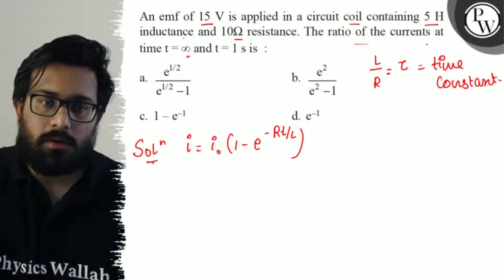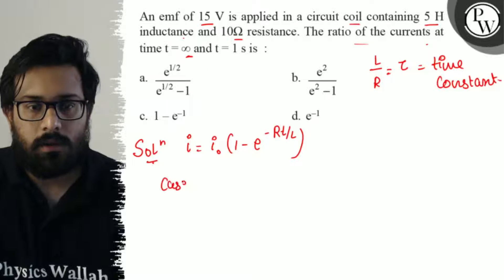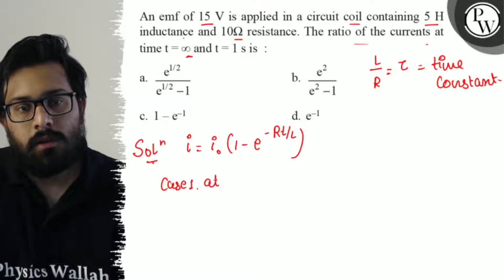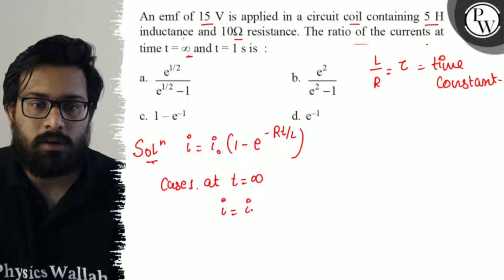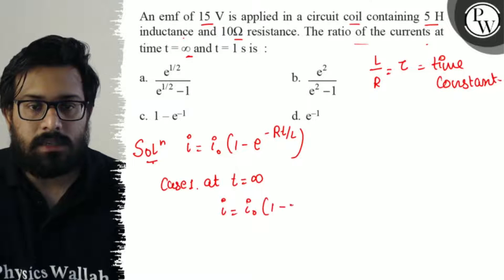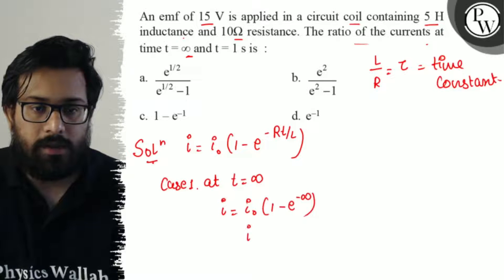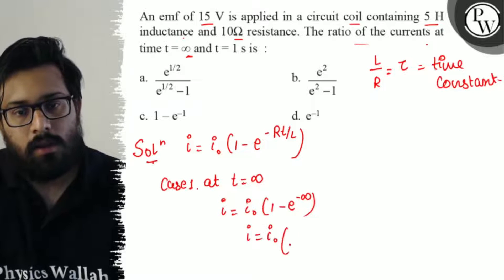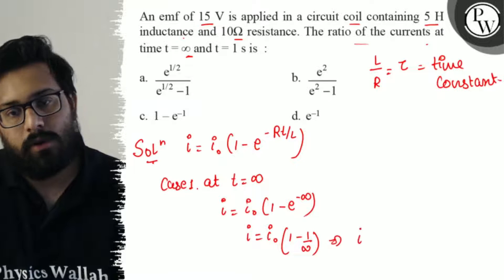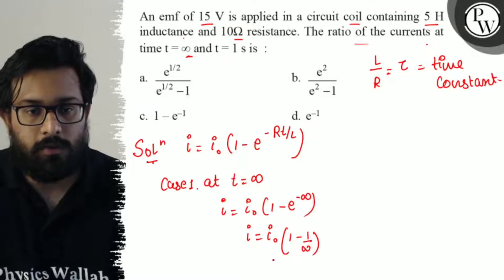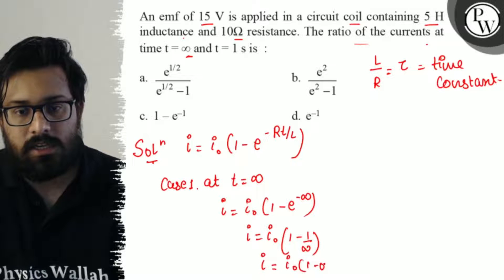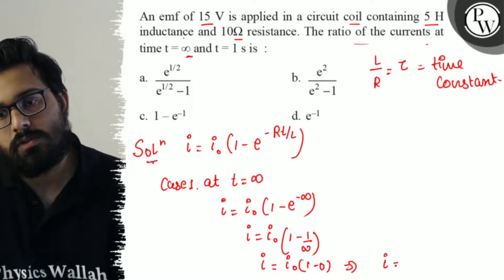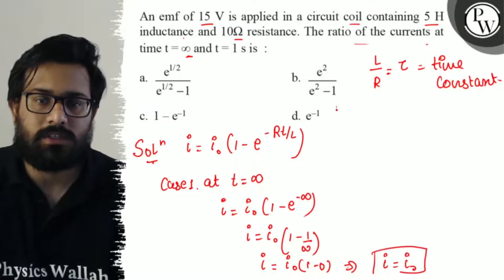At t equal to infinite — case one — you get the value of current as i equals i naught times (1 minus e raised to power minus infinite). Solving further, e raised to minus infinite equals 0, so i equals i naught times (1 minus 0), which means i equals i naught. That is the value in the first case.